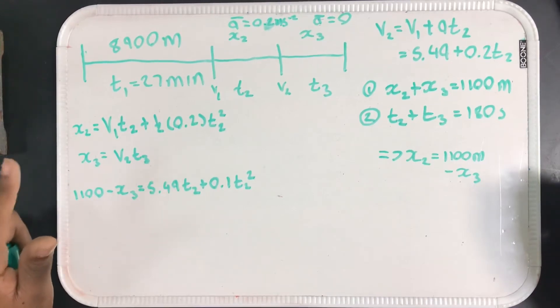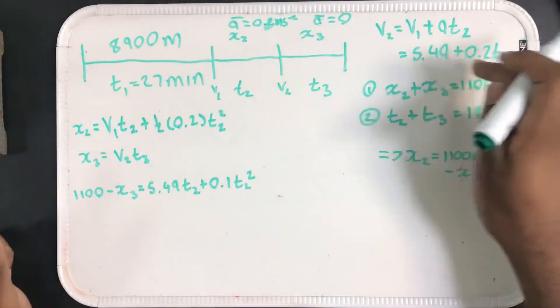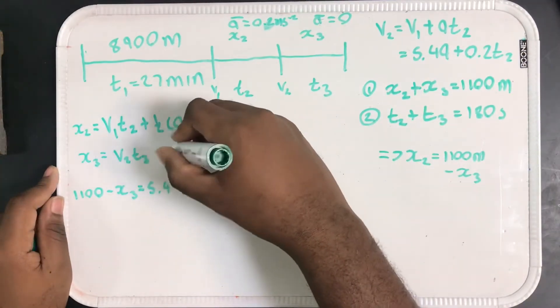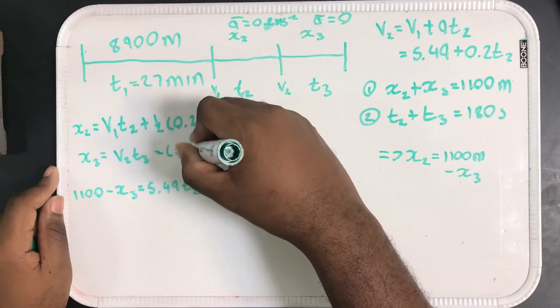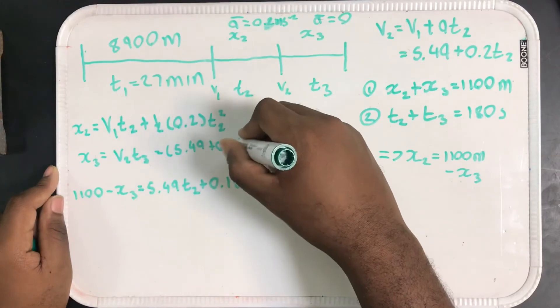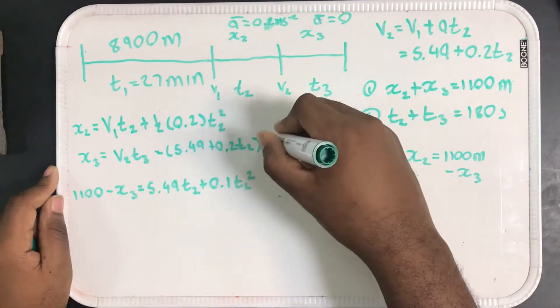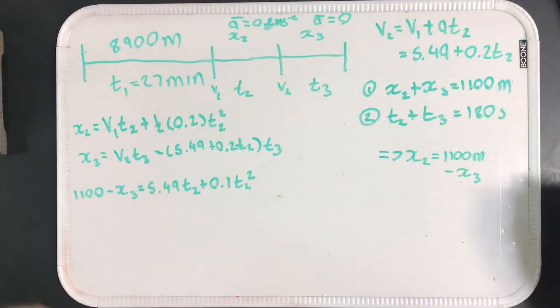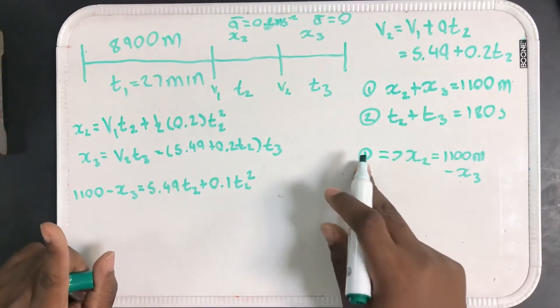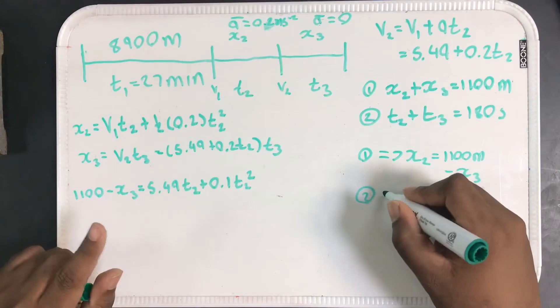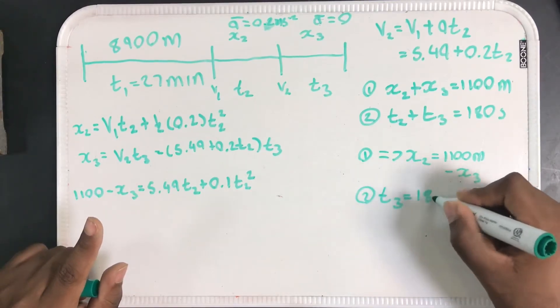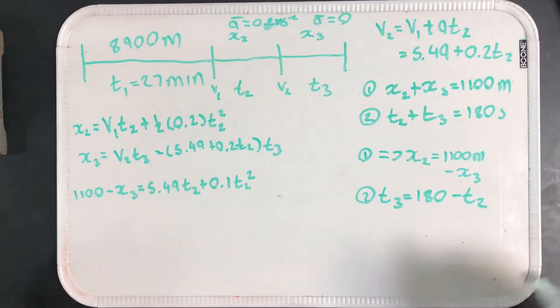However, I do know that X3 equals V2 times T3, and I know V2. I can write V2 in terms of T2. So if I finish this, I should have 5.49 plus 0.2 T2 times T3. And again, I have a T3. However, there's something I can do because equation 1 implies this. So now I have equation 2 implies that T3 equals 180 minus T2. And the only thing I'm doing here is I'm using the relationships that I know to find unknowns, and I'm getting rid of variables that I don't know and writing them in terms of other things.